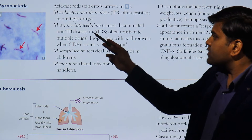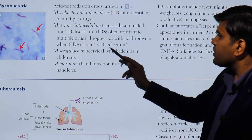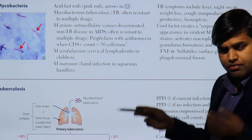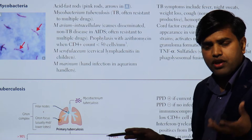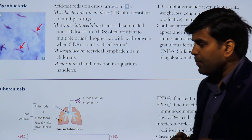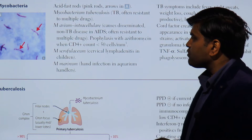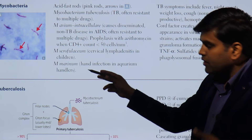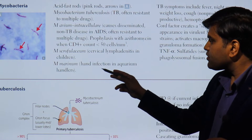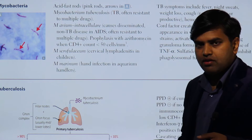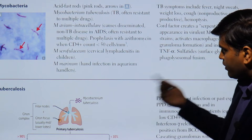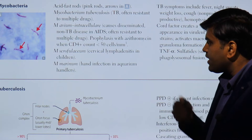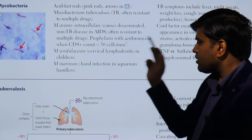Any patient with AIDS whose CD4 count has become less than 50 — you have to think about mycobacterium avium-intracellulare complex and treat accordingly. We give prophylaxis because the CD4 count is less than 50 in the AIDS patient. Mycobacterium scrofulaceum causes cervical lymphadenopathy in children. Mycobacterium marinum — as the name suggests — is acquired in a marine environment and causes hand infection in aquarium handlers.